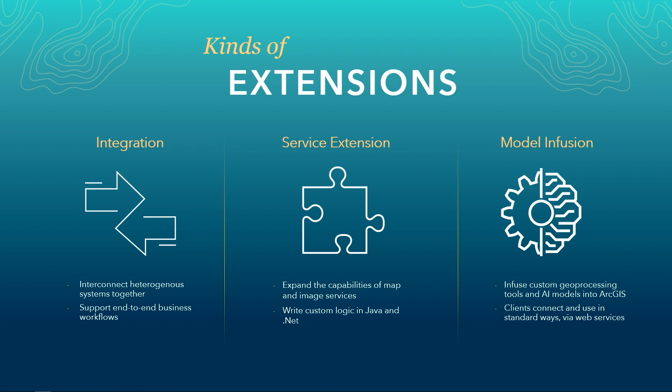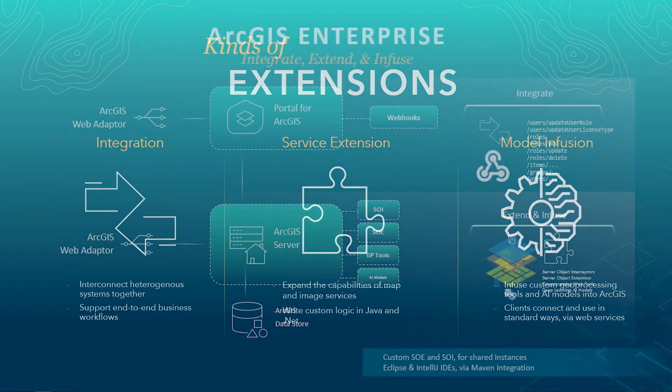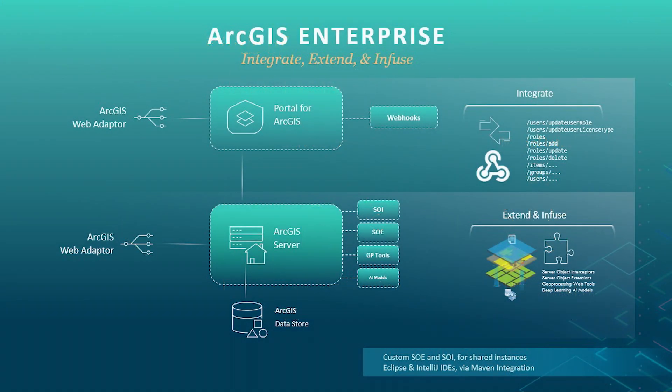Or you can infuse models, where you build, deploy, and infuse custom geoprocessing tools or AI models, and standard clients can consume them as web services and web tools. RJS Enterprise supports all of these patterns, as you can see in this diagram. To integrate, you can set up webhook notifications and listen to events of interest in your portal.